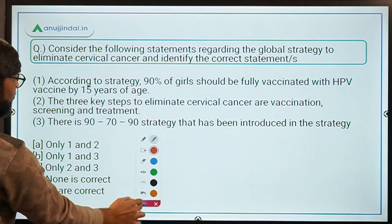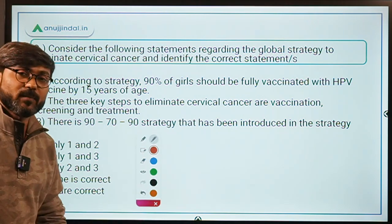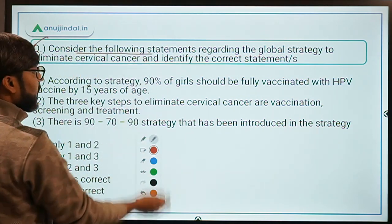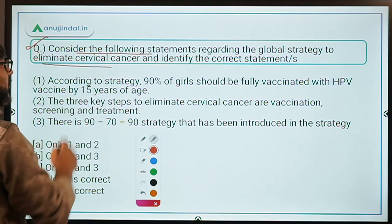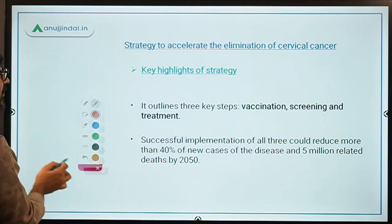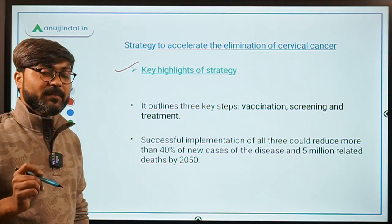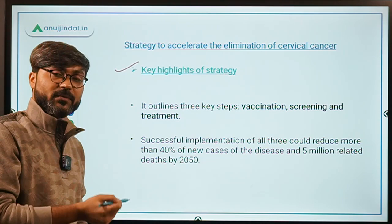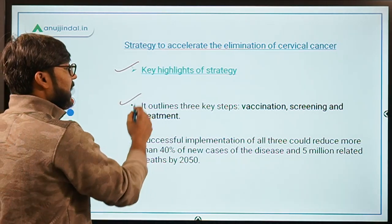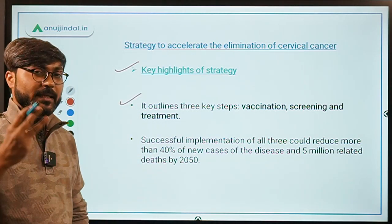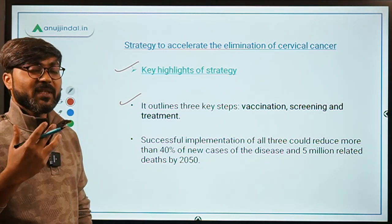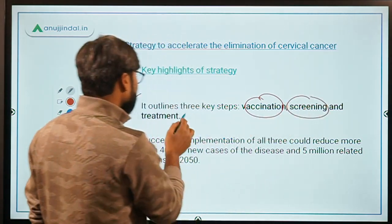The first question is about the global strategy launched by the World Health Assembly for cervical cancer. Consider the following statements regarding the global strategy to eliminate cervical cancer. This is the first time that WHO has launched this type of strategy to accelerate the elimination of cervical cancer. The strategy outlines three key steps that have to be followed: vaccination, screening, and treatment.